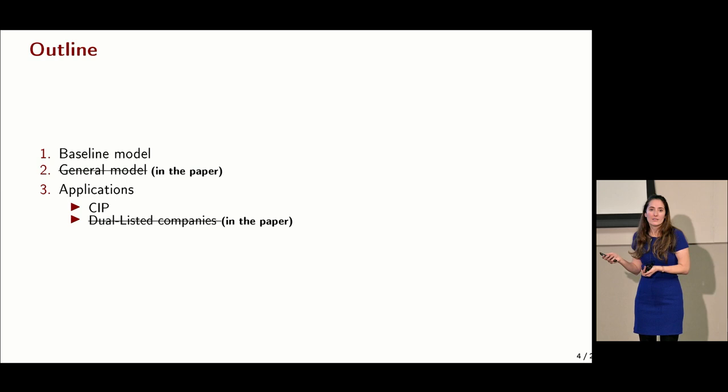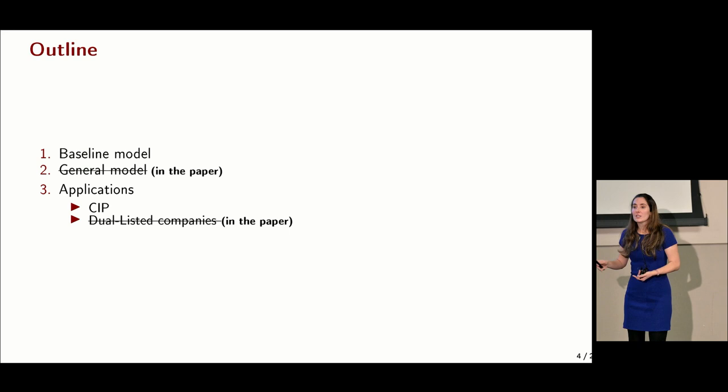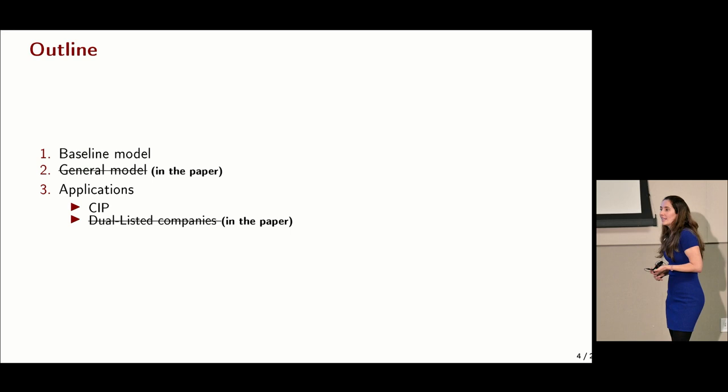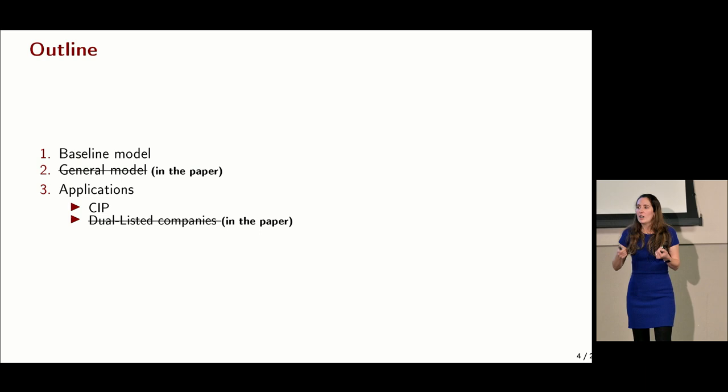In the paper — which I won't show today — we extend this baseline model to allow for uncertainty, multiple periods, many different investors, and many different asset classes. We show that what we capture in the baseline model is actually the direct cost of arbitrage, and that is what we take to the data in the CIP application.